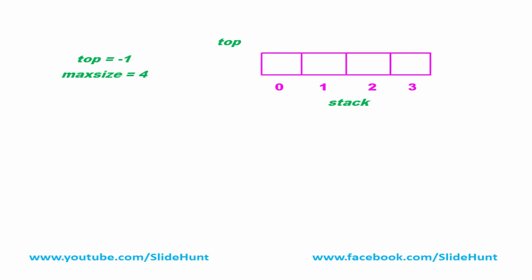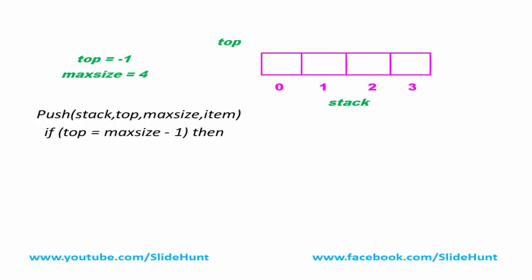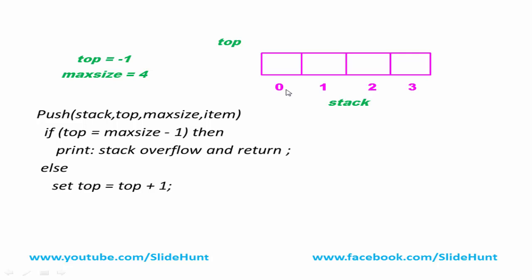Now I'm going to write the algorithm for the push operation. Before inserting an item, we first need to check whether there is any space in the stack. For that, if top equals max size minus one, it means there is no space — this condition is called stack overflow — we print 'stack overflow' and return. Otherwise, we increment top by one and then insert the item at the top position: stack[top] = item.